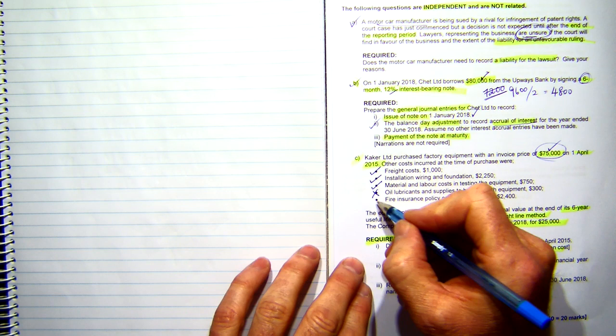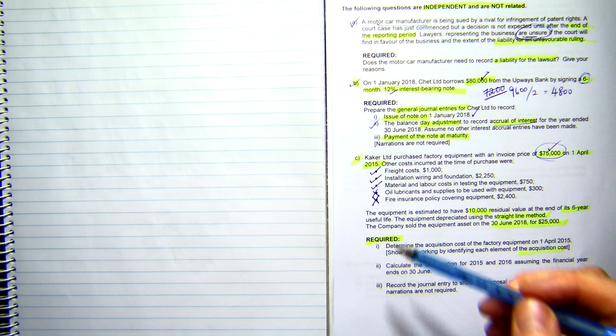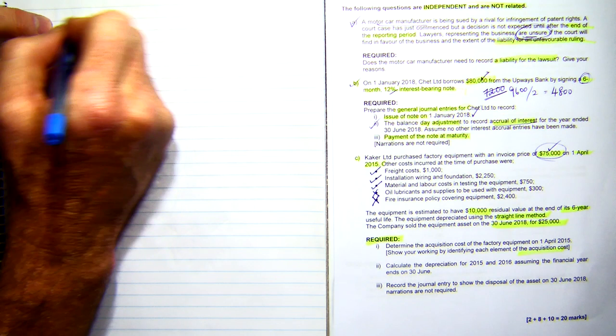And the last one, the fire insurance policy covering the equipment. Now, fire insurance is an ongoing cost, so we're not going to include that one either. We're only including those one-off costs that are getting the equipment ready for use.